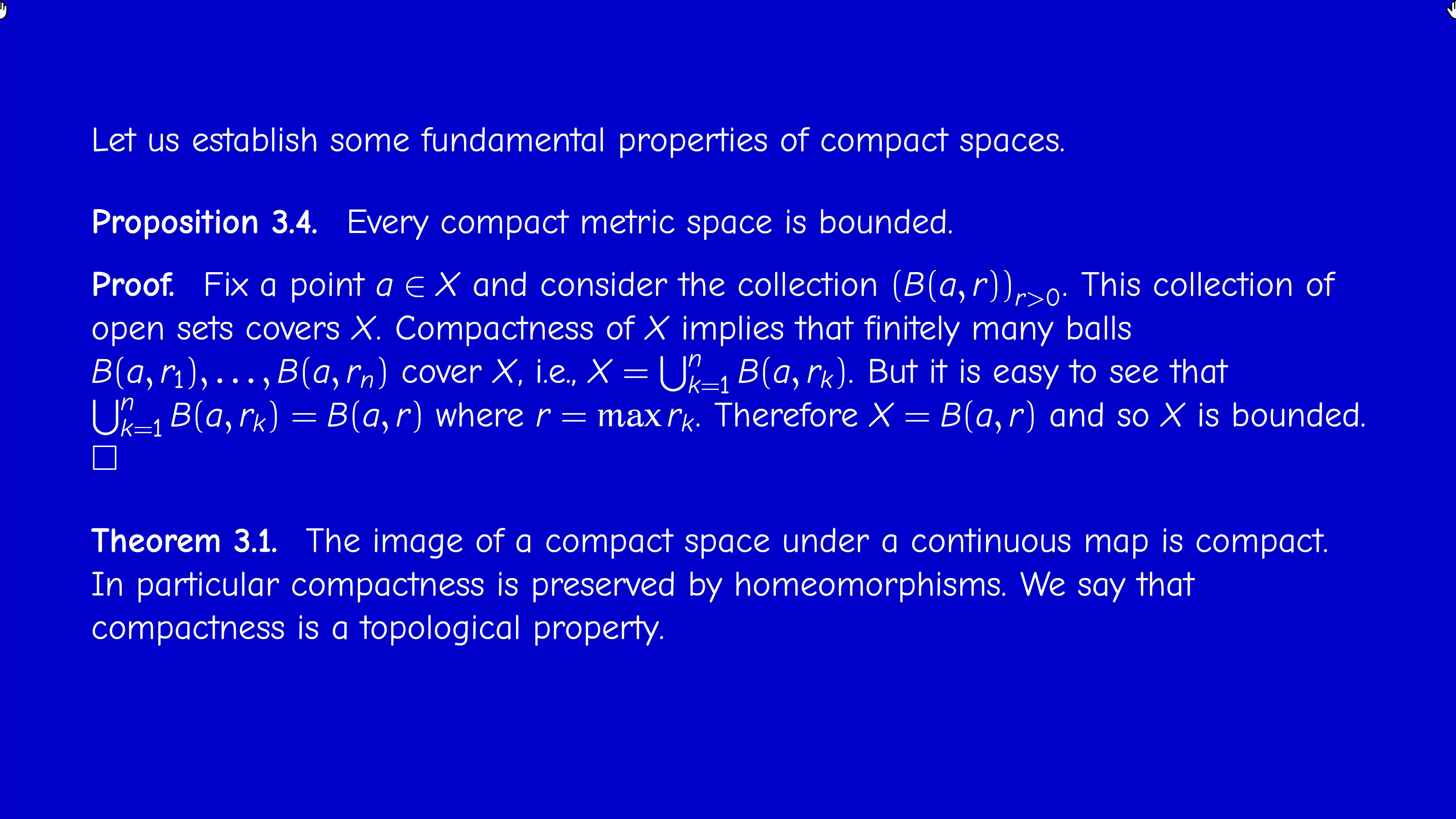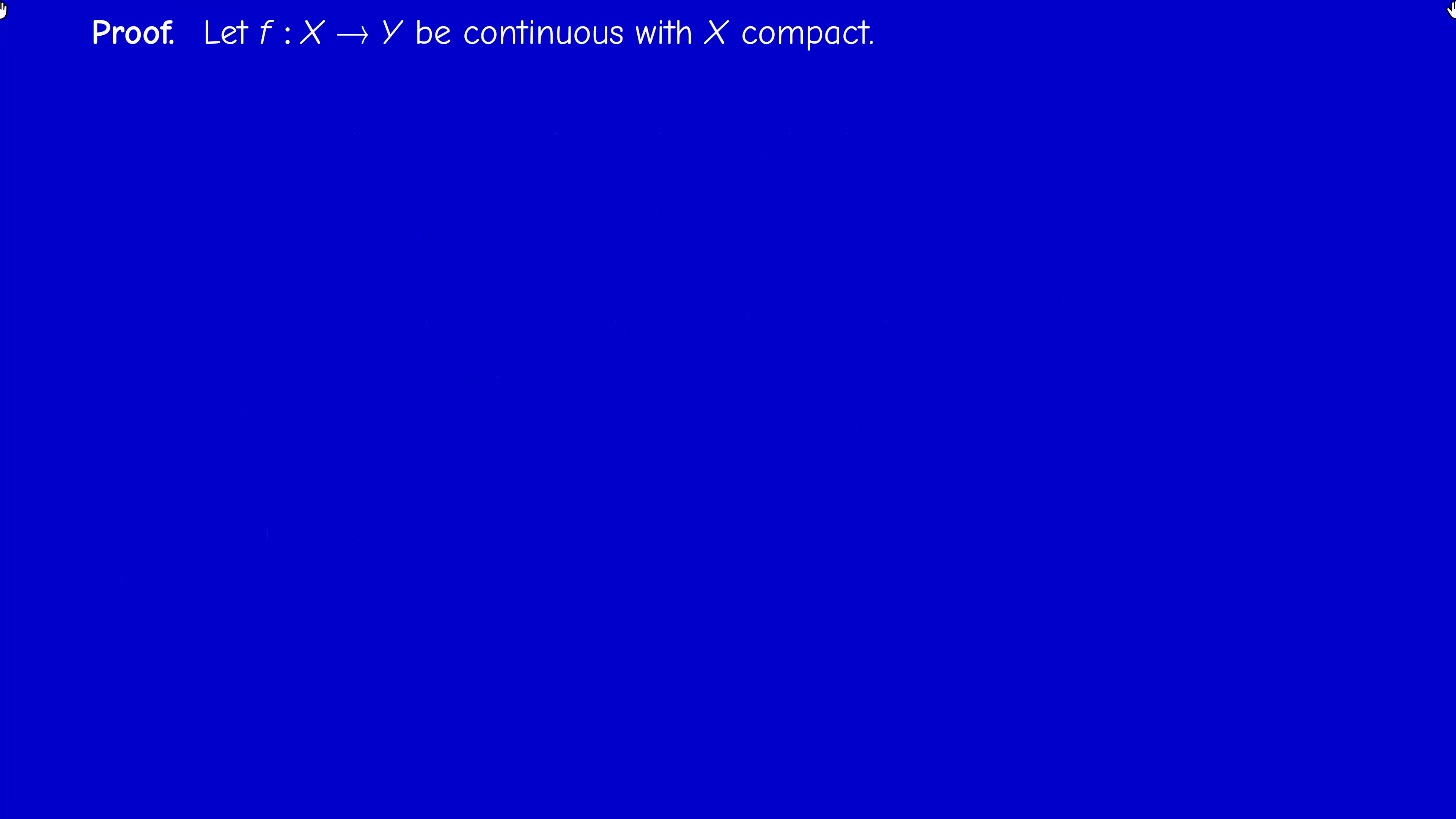We say that compactness is a topological property. So if two spaces are homeomorphic and one is compact, the other is necessarily compact. If one of them is not compact, the other is necessarily not compact. Here's the proof. Consider a continuous map from a compact topological space X into another topological space Y.